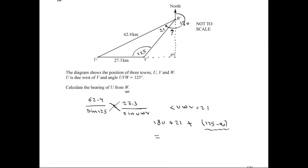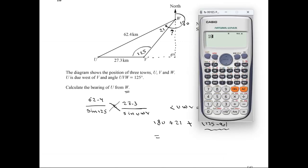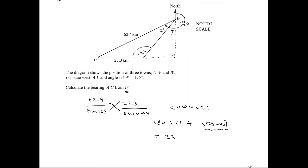To find the sum: 180 plus 21 plus 125 minus 90 equals 236 degrees. You have to be sure it is three significant figures. Thank you.